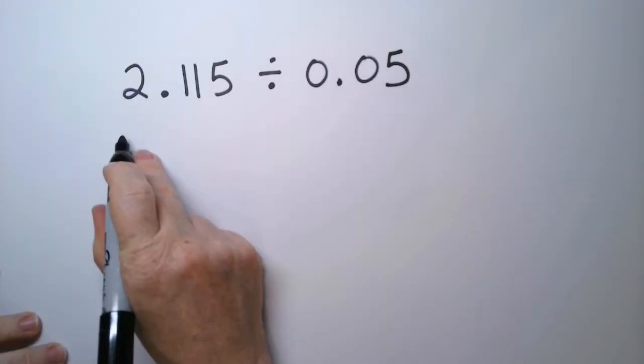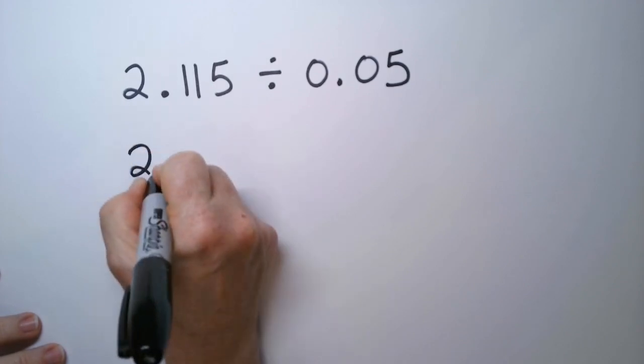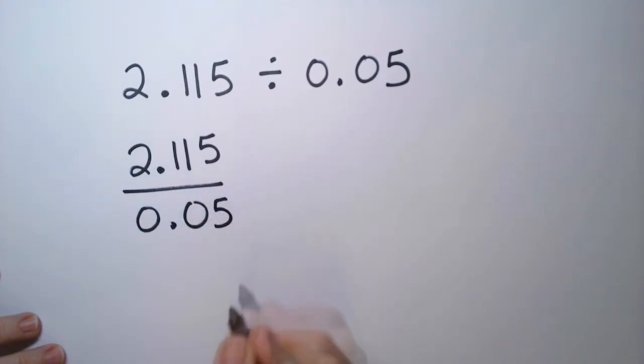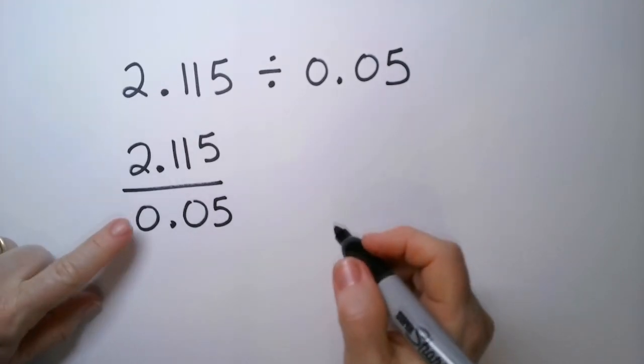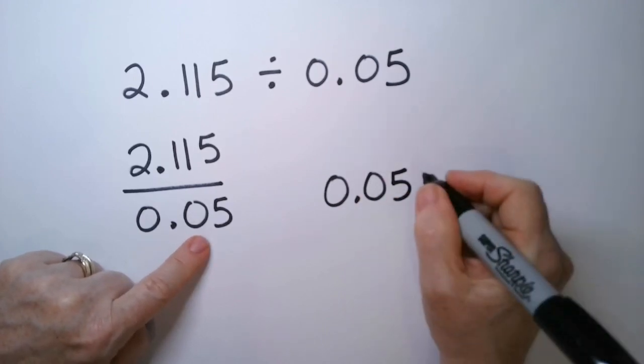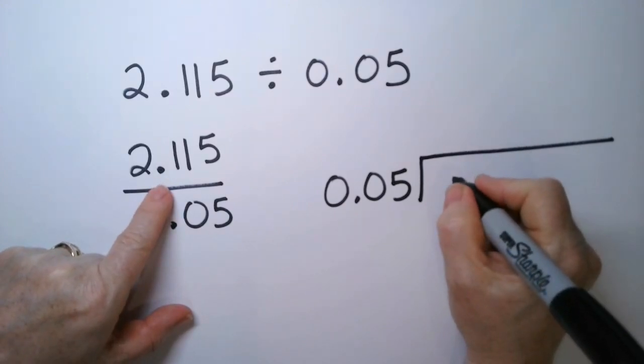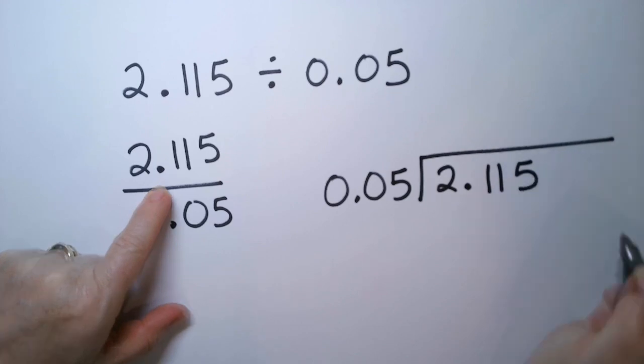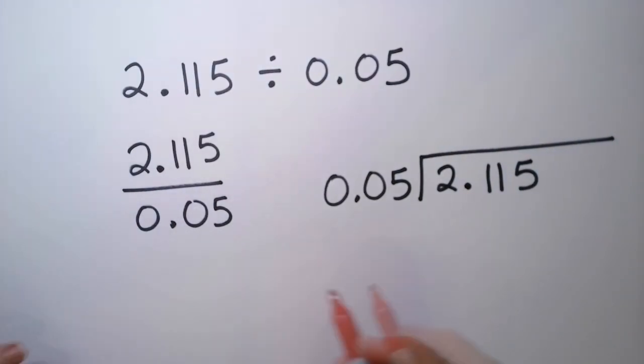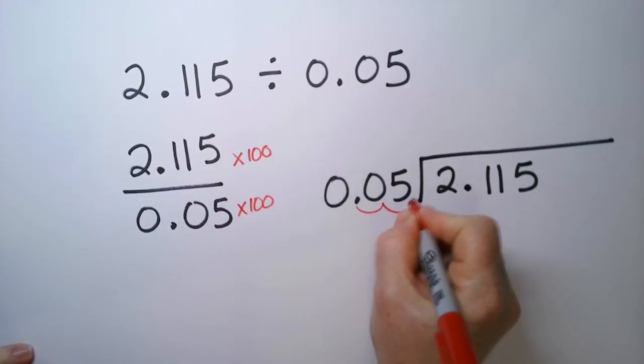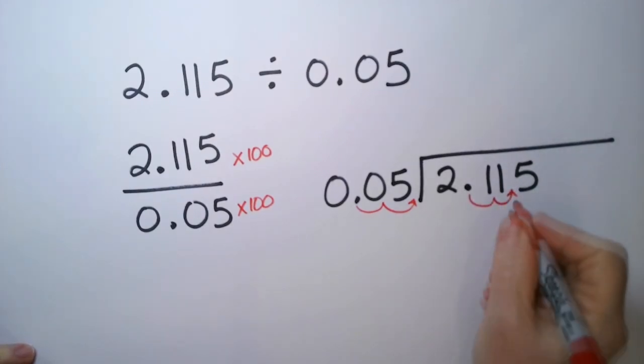So let's set this up together. This is going to be 2.115 divided by 0.05. Now this time, do you see how I'm going to have to multiply by 100 here? Not just 10. So let's put the divisor. Let's put a - we're going to rewrite the denominator. Put a visor on it. There we go. And put the dividend into the den. And then what we're going to do is multiply top and bottom by 100. So this thing becomes a whole number. So 1, 2. The decimal point now goes there.